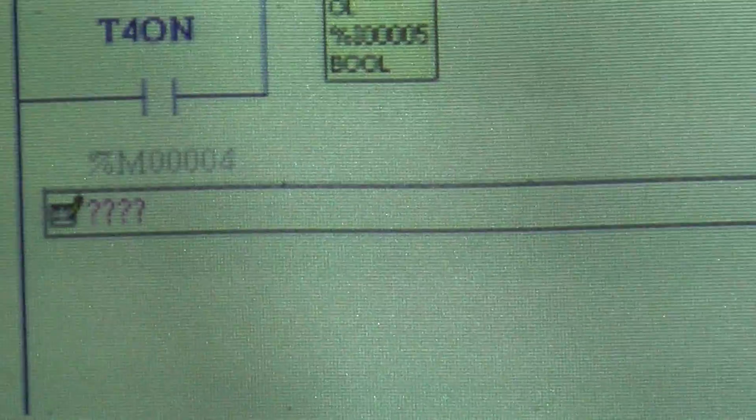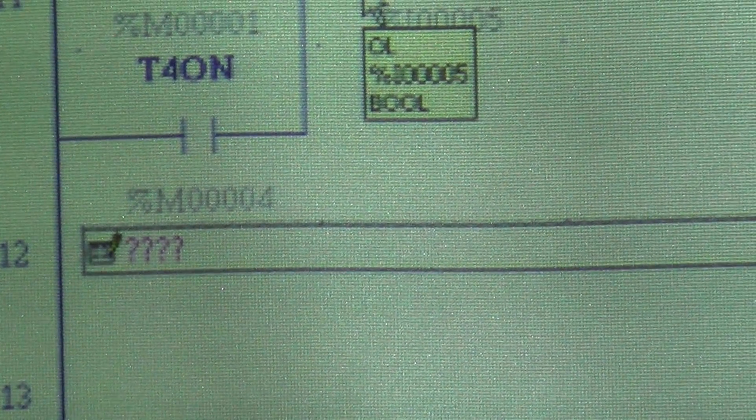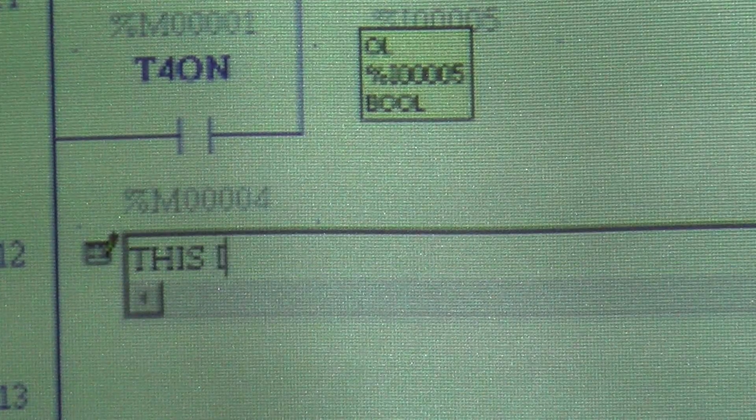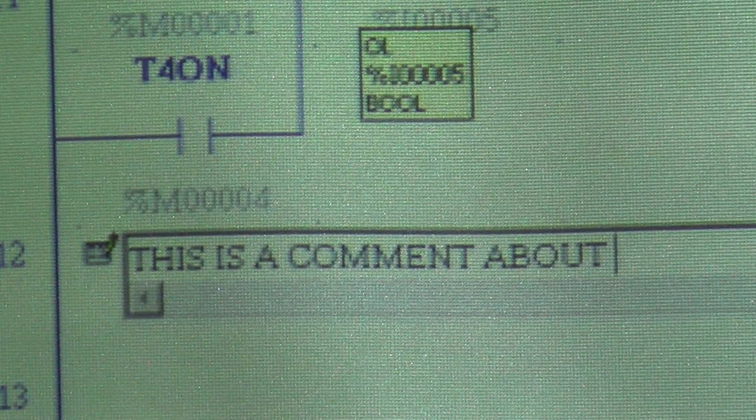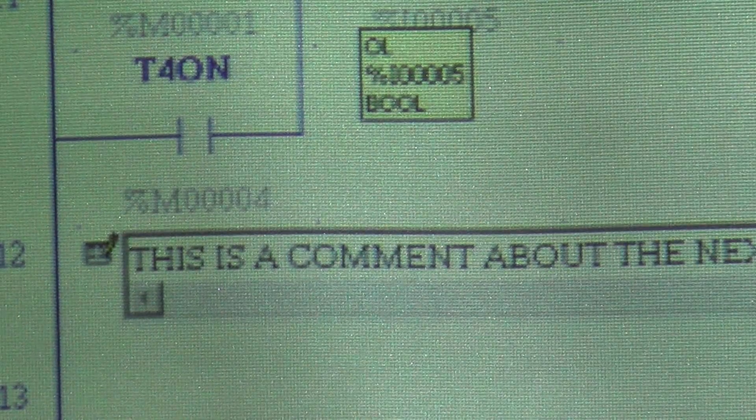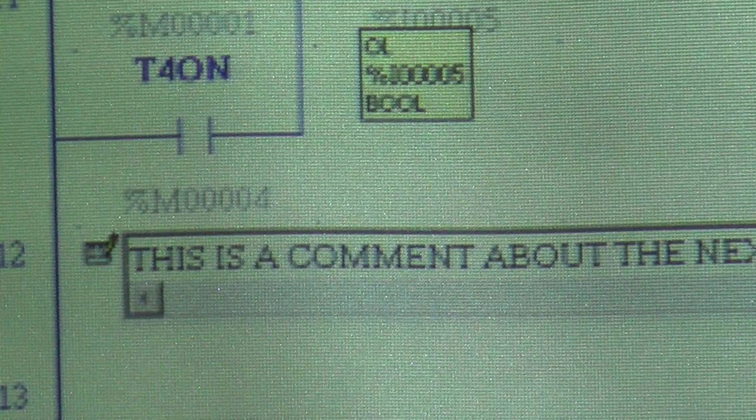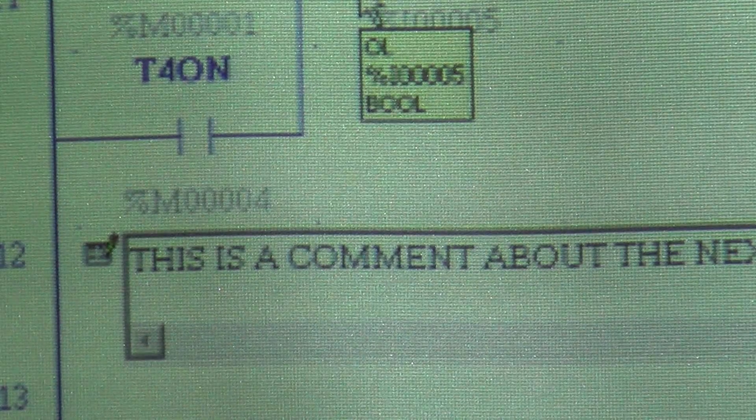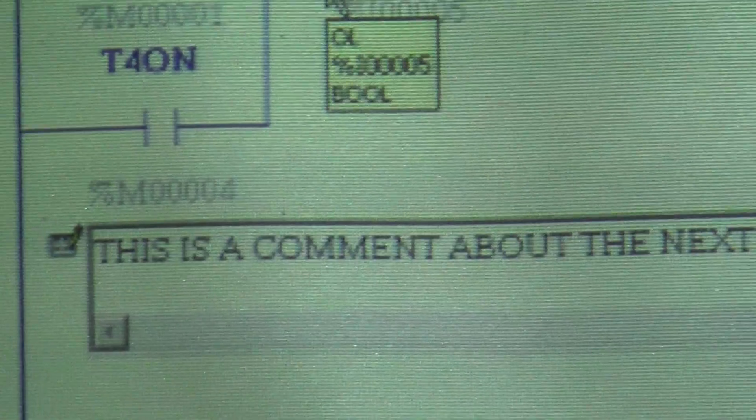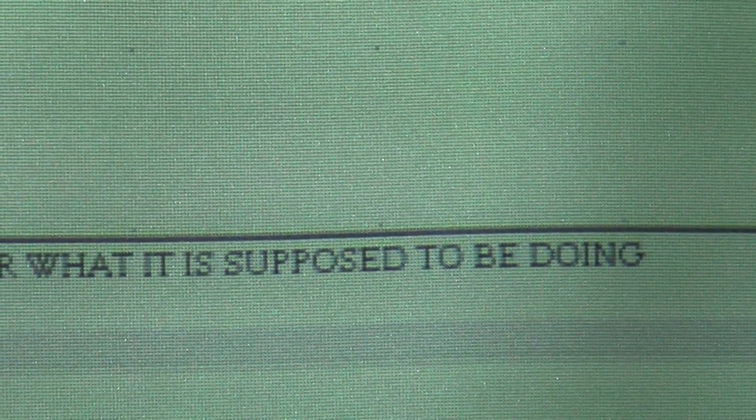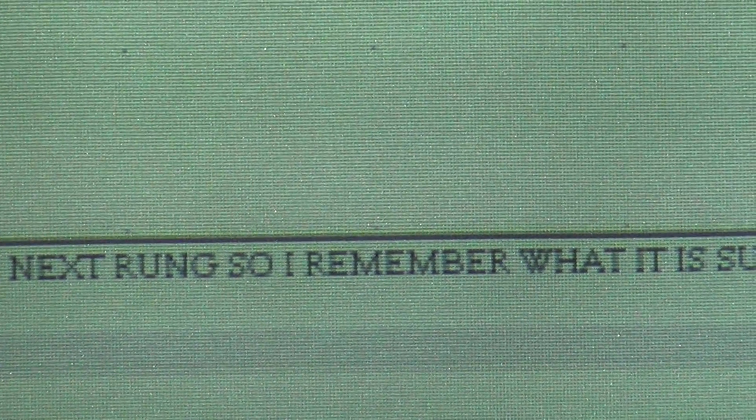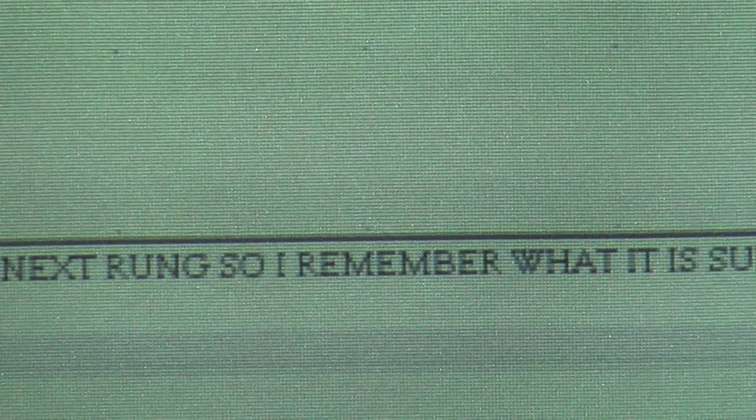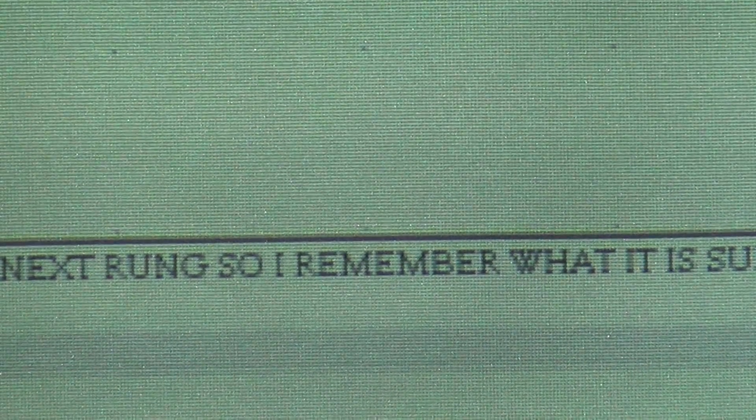Go down there and you're going to see that thing right there. Then I just start typing my comment. You can type your comment and it said this is a comment about the next rung, so I can remember what it is supposed to be doing. That's the whole part about comments. Somebody else comes up later on and looks at what kind of trick logic is he doing - you can explain it and someone can look at it and get an idea of what it's supposed to be doing.